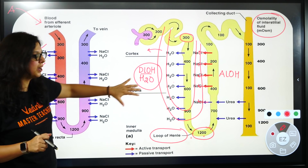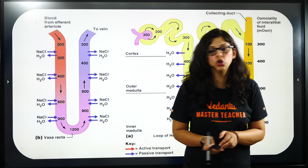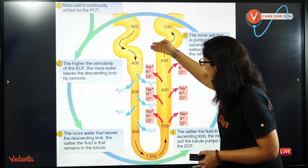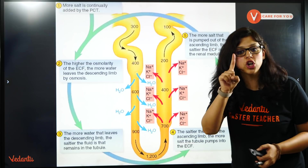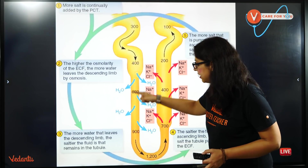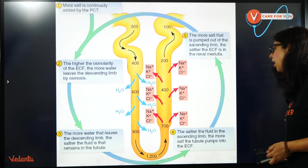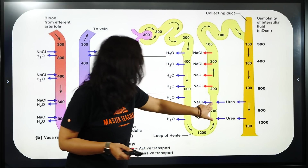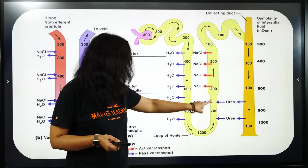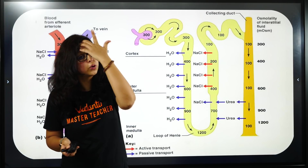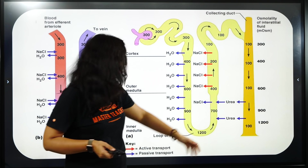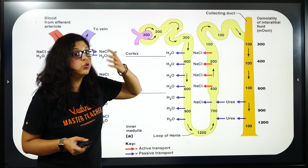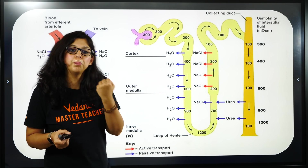आप इनको superimpose भी कर सकते हो एक दूसरे के ऊपर — let me show that to you. देखिए: sodium बाहर आ रहा है, potassium बाहर आ रहा है, chlorine बाहर आ रहा है — in the medullary interstitium — because of which the osmolarity is increasing, because of which descending limb of Henle से पानी बाहर आएगा. एक और चीज़ — जो आपकी collecting duct है, उससे urea यहाँ enter कर रहा है, और जब urea enter करेगा तो obviously osmolarity और solute concentration increase हो रही है. So urea यहाँ enter करेगा, sodium chloride बाहर आ रहा है, और medullary interstitium की value बढ़ेगी तो पानी बाहर आएगा.